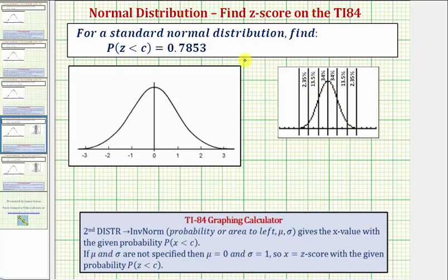We should be able to recognize that because 78.53% is between 50% and 84%, the value of c that we're looking for is going to be between zero and one standard deviations above the mean, somewhere in here.